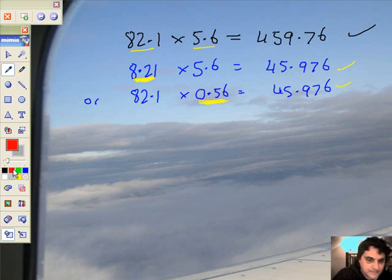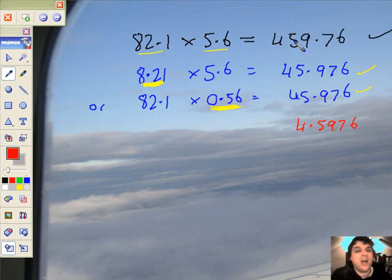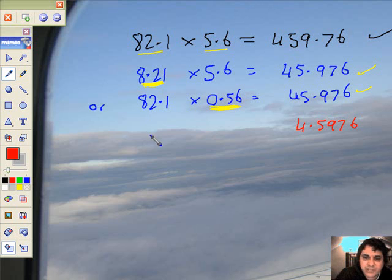So I can drop down the 82.1 and call it 8.21. Or I can drop down the 5.6 down to 0.56. Either way, I'm going to get the answer correct. Moving along, change color. They want me to get 4.5976. Well, compared to the original, I've gone back once, twice. I've divided by 100. Therefore, I can shrink them both down if I want to.